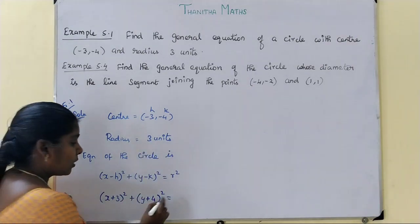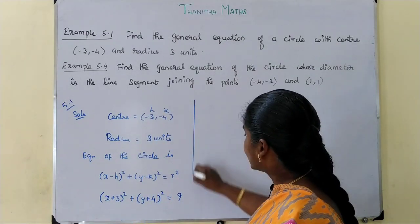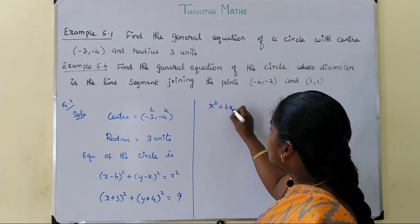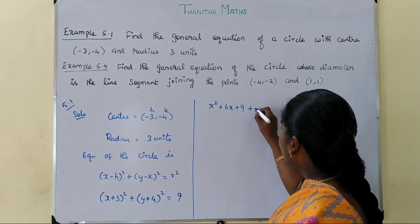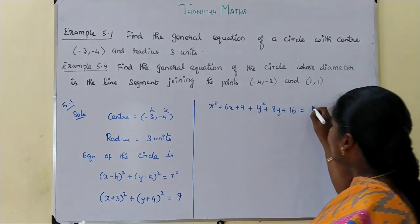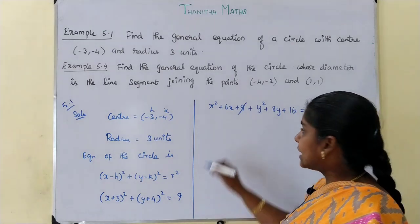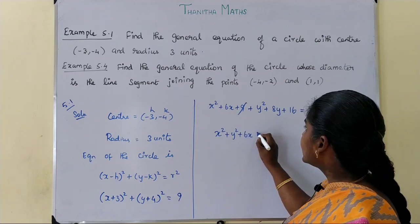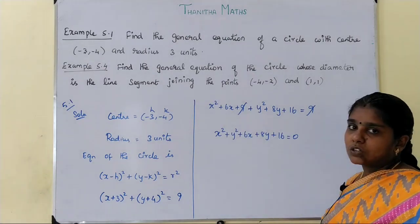r squared: r value is 3, so 3 square is 9. Expanding x plus 3 the whole square gives x square plus 6x plus 9. Expanding y plus 4 the whole square gives y square plus 8y plus 16. So the general equation of the circle is x square plus y square plus 6x plus 8y plus 16 equal to 0. This is the required equation of the circle.